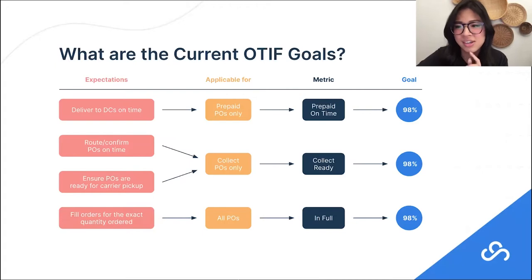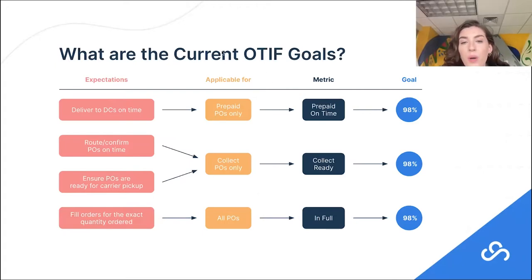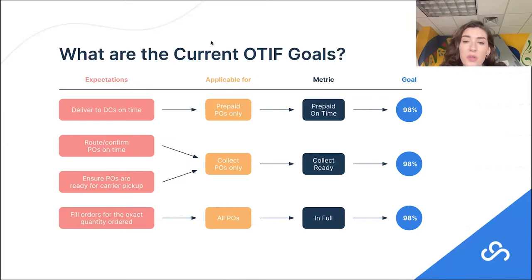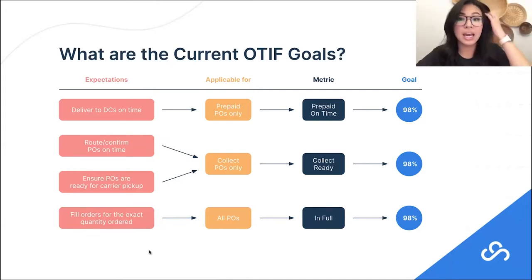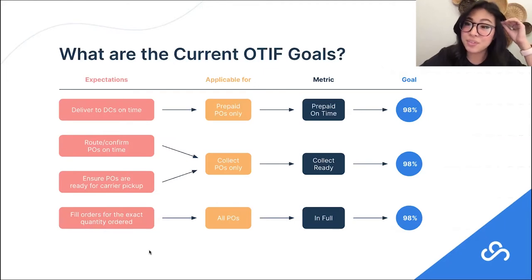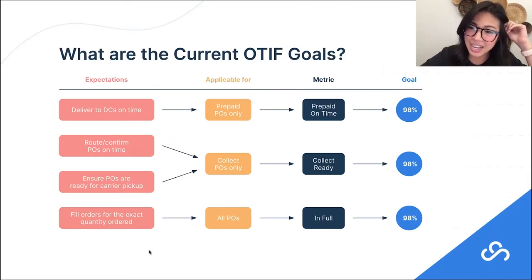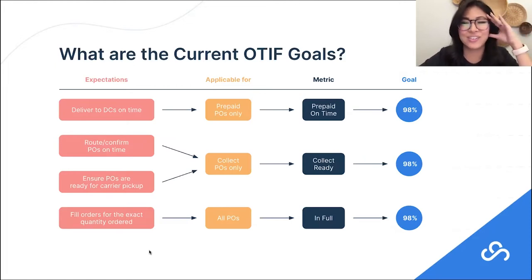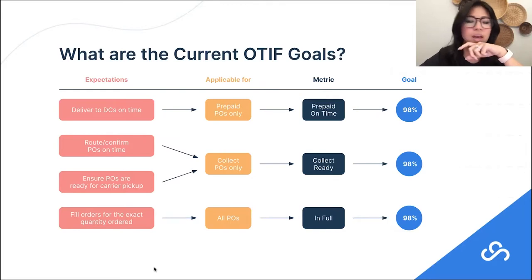For the on-time piece, there is a separation based on whether you are a prepaid supplier or a collect supplier. If you are a prepaid supplier, you the supplier are responsible for getting product to the Walmart DCs — usually by contracting with a third-party carrier. You are responsible for getting the product to the Walmart DCs within your MABD or must-arrive-by-date window. Canada actually has a different compliance program with its own fees, and if I'm not mistaken, Canada's OTIF fines can be up to 40% of the PO amount — which is really intense compared to the 3% cost of goods for Walmart US.